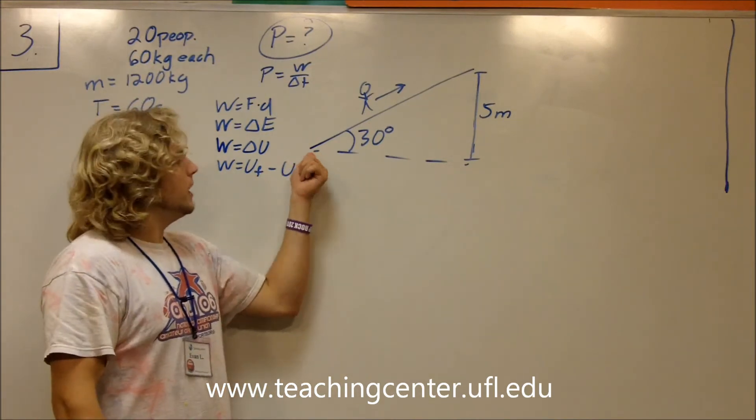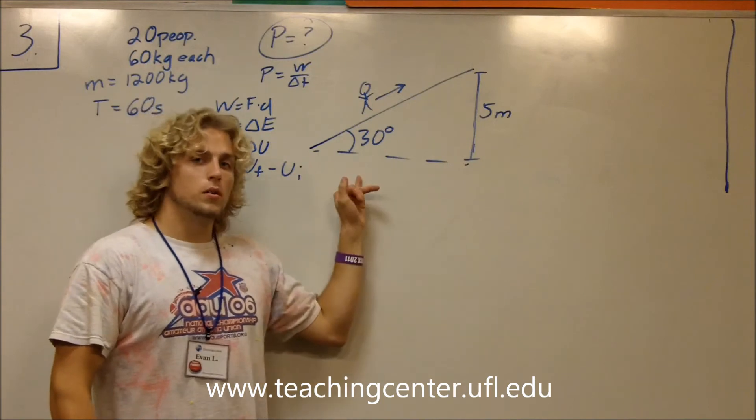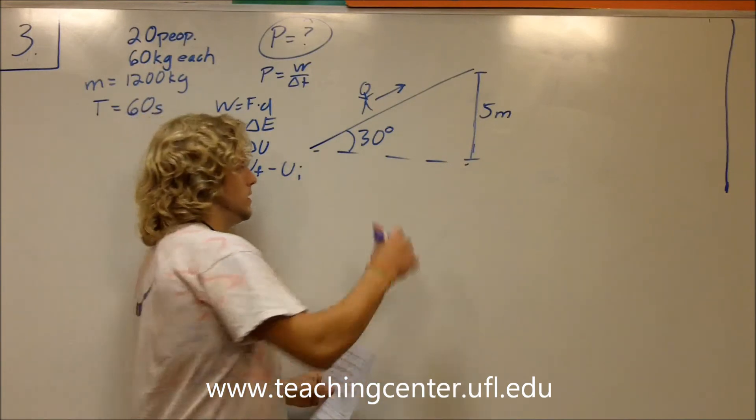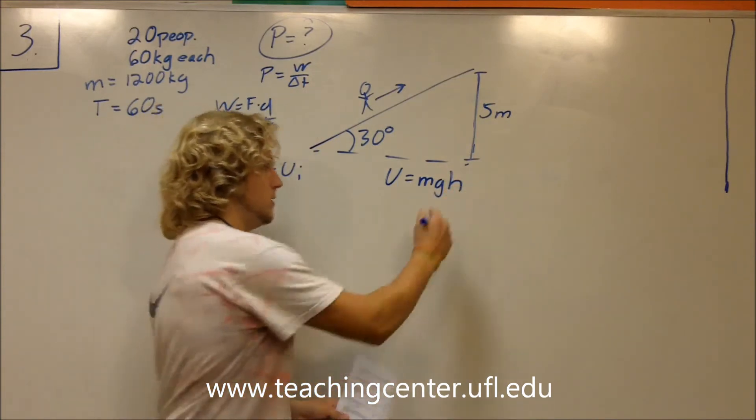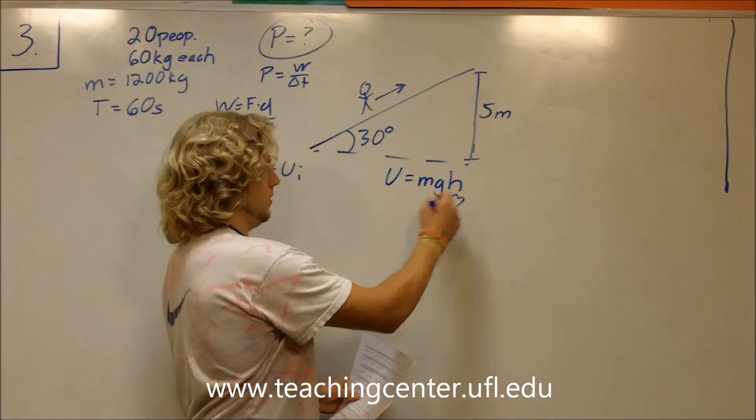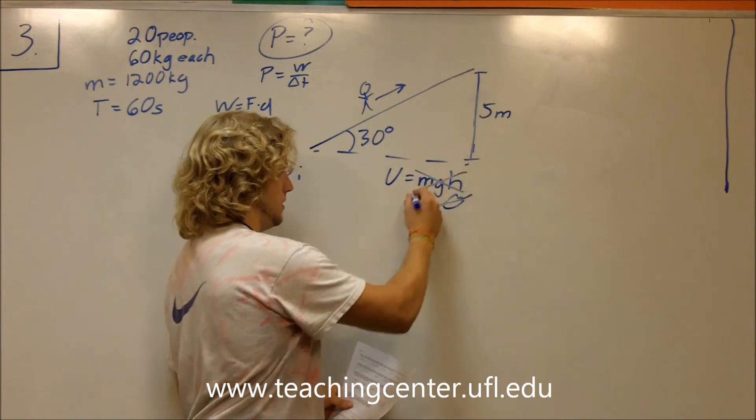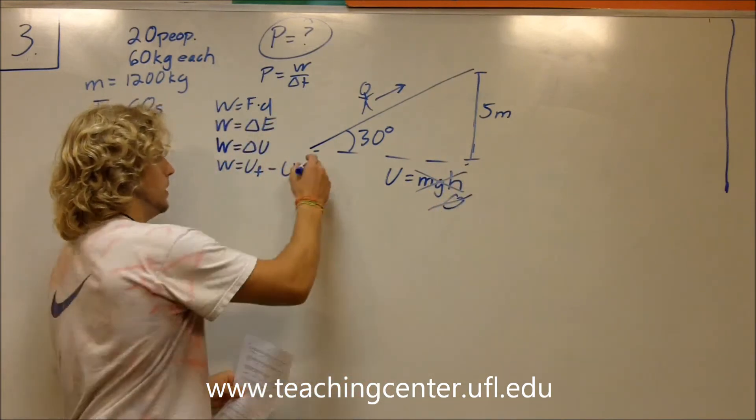Now, u initial at the bottom, the height is zero. The height is zero, and since we know u is equal to mgh, with the height being zero multiplied throughout, the whole thing equals zero. So this goes away.